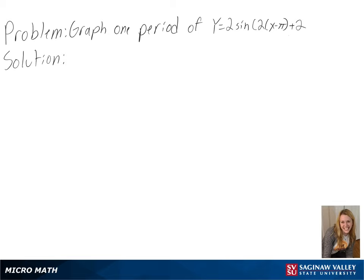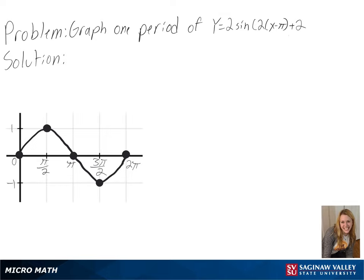Our problem is to graph one period of y equals 2 sine of 2 times x minus pi plus 2. We can look at an original graph of y equals sine x to see how ours will be changing.